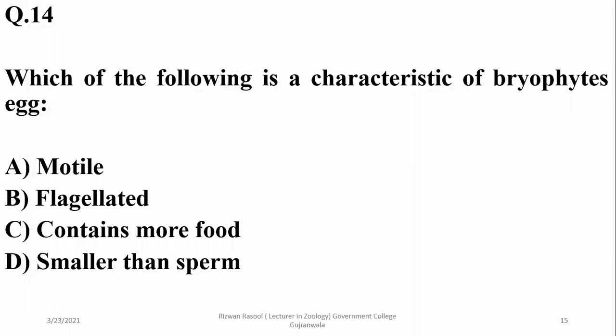Which of the following is a characteristic of the bryophyte egg? The bryophyte egg is not motile, not flagellated, but it contains more food compared to the sperm. So the right option is C.